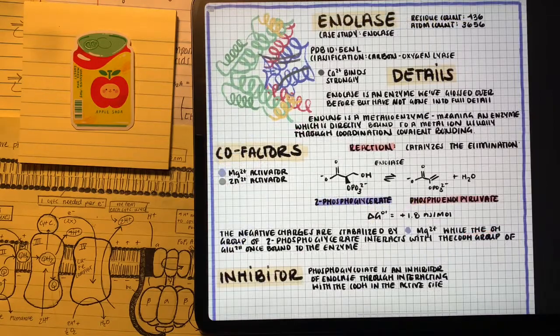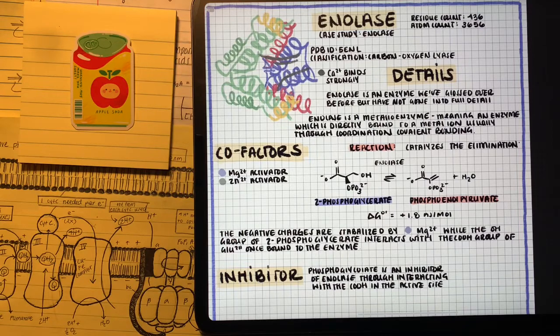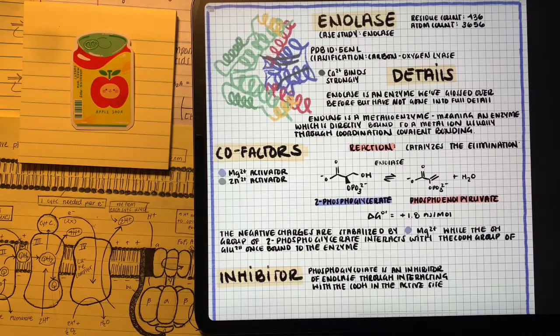After forming 2-phosphoglycerate, the enolase is going to come in to form a high-energy molecule phosphoenolpyruvate. Phosphoenolpyruvate is our second high-energy, extremely high-energy molecule in glycolysis.